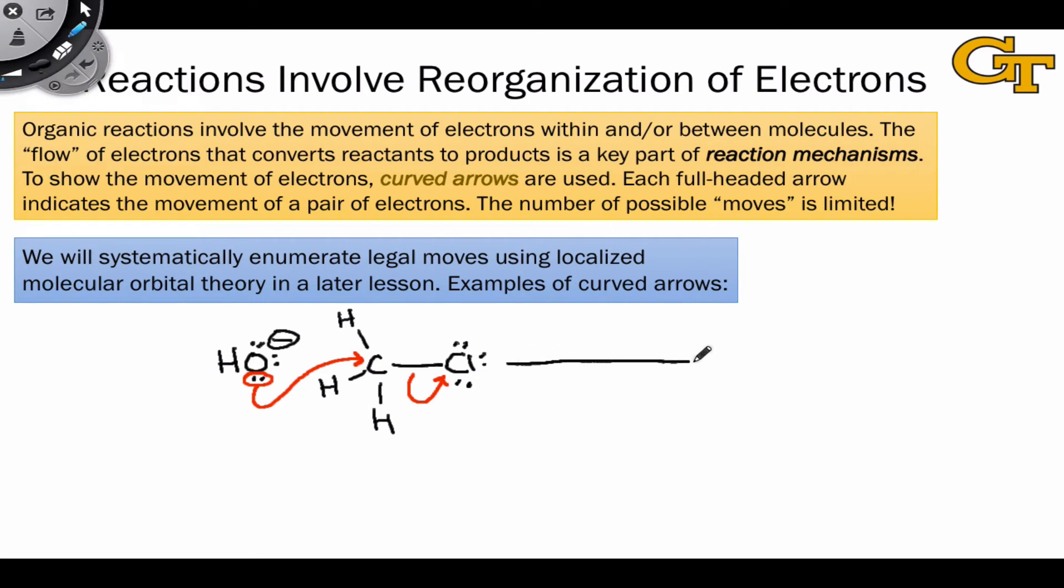From the structures of the starting materials and the curved arrows given, we can deduce the structures of the products, and that's an important aspect of the system as well. The curved arrows imply, in a deductive sense, the structures of the products. So, what this arrow is telling me to do, for example,